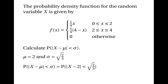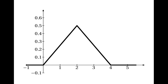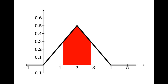So P(|X − 2| < √(2/3)) means the distance between X and 2 is less than √(2/3), i.e. X is no further from 2 than √(2/3). In other words, X is greater than 2 − √(2/3) and less than 2 + √(2/3). So we want the probability that 2 − √(2/3) < X < 2 + √(2/3), which corresponds to a central region on the graph.